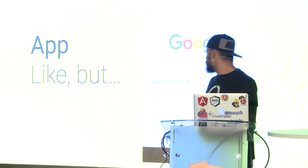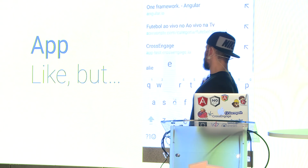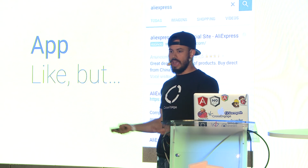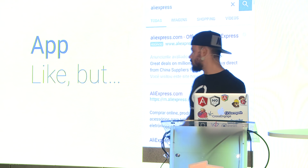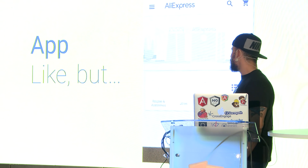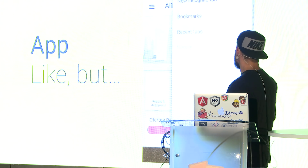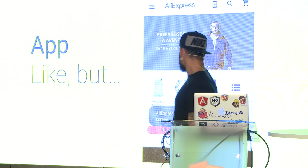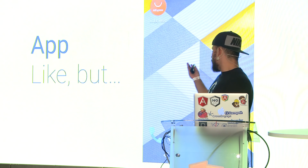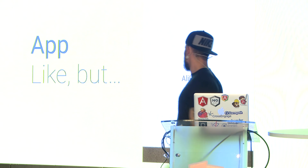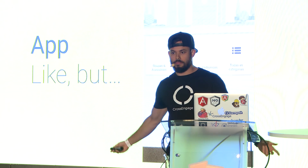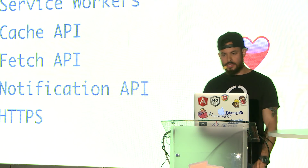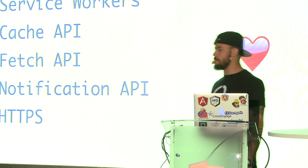By discoverable, I mean you can Google it — like going to the App Store and finding the application you want. You install it by adding it to your home screen, and then it's an app. You can open it, there's a nice splash screen, and you use it. This is possible thanks to the latest web technologies.